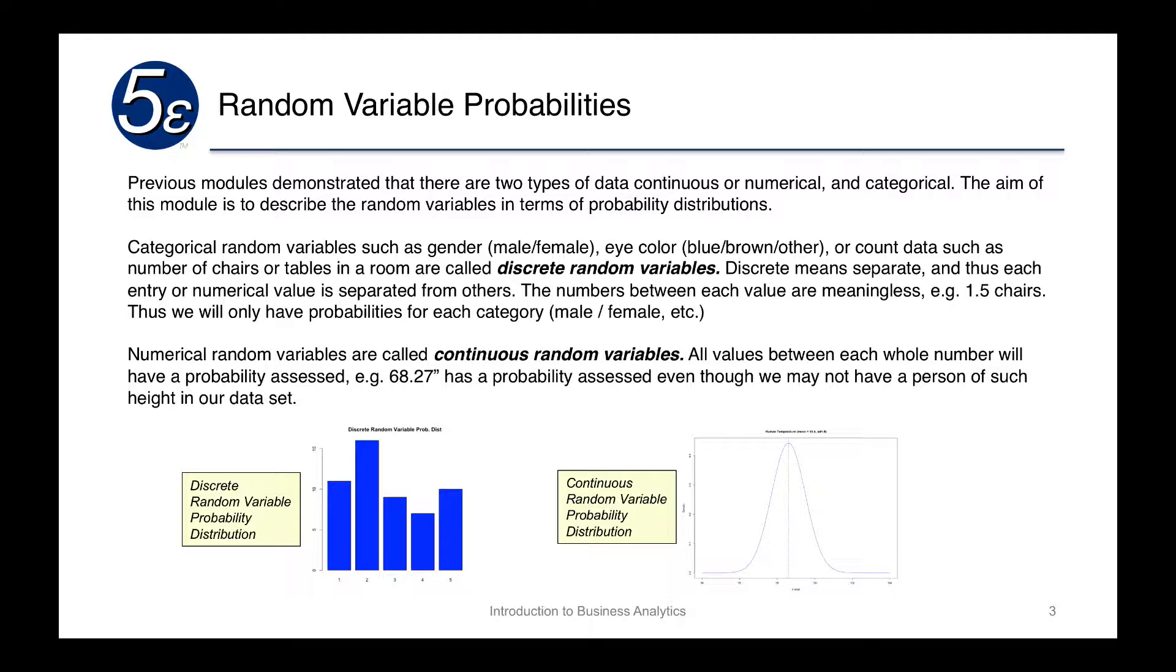In previous models, we had shown that there are two types of data: continuous or numerical data, as well as categorical data. The aim of this module is to describe random variables in terms of these probability distributions.